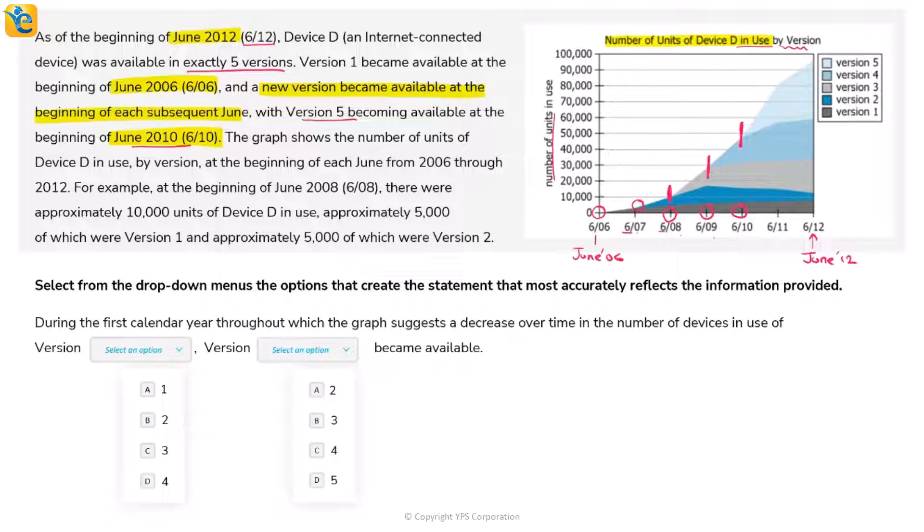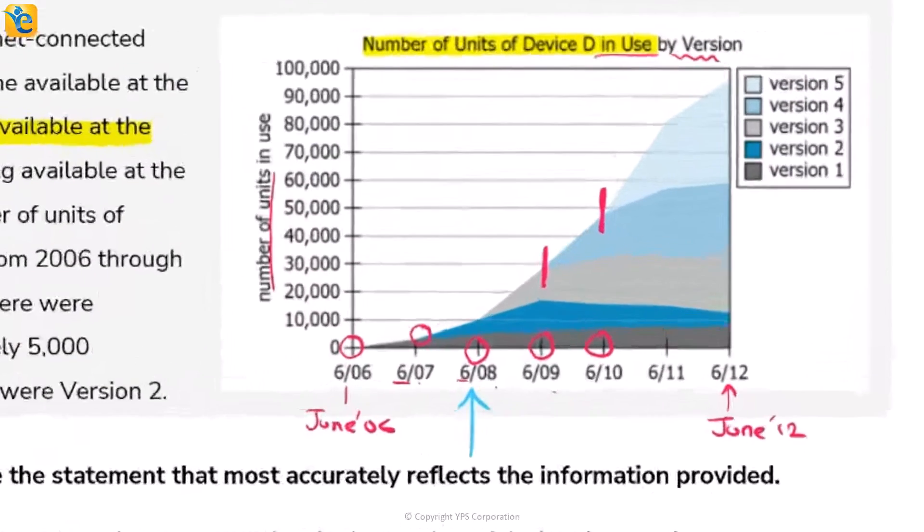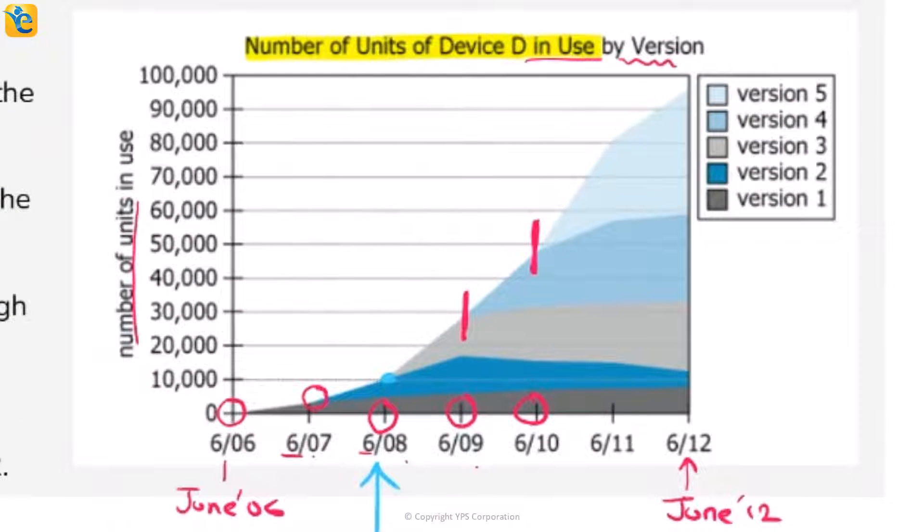At the beginning of June 2008, there were 10,000 units of Device D in total. That 10,000 point is the tip of the graph at this point, the highest point showing all devices. You can see it's the dark blue and gray sections, meaning Versions 1 and 2.